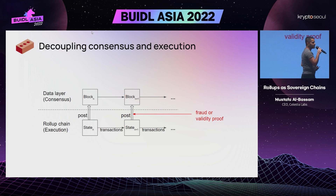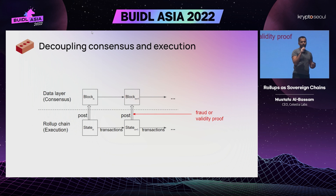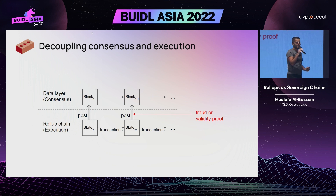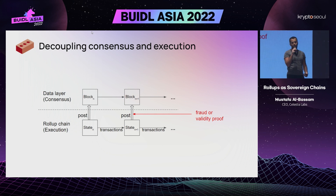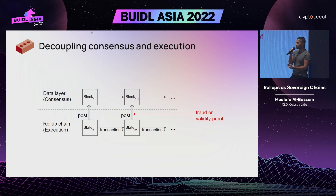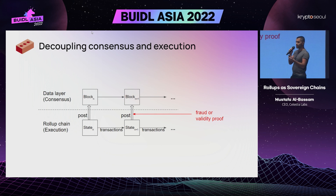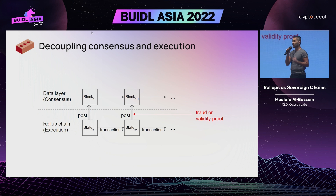And if the rollup chain misbehaves and lies about or tries to insert an invalid transaction, you can have a fraud or a ZK proof to prove that the transactions in that rollup chain are correct.